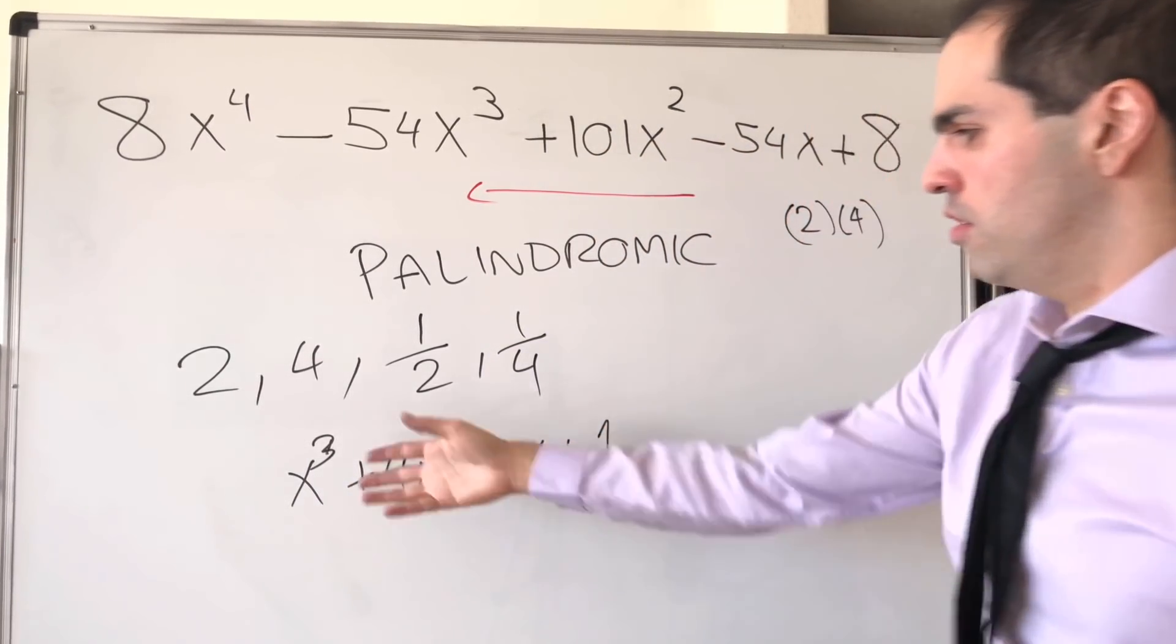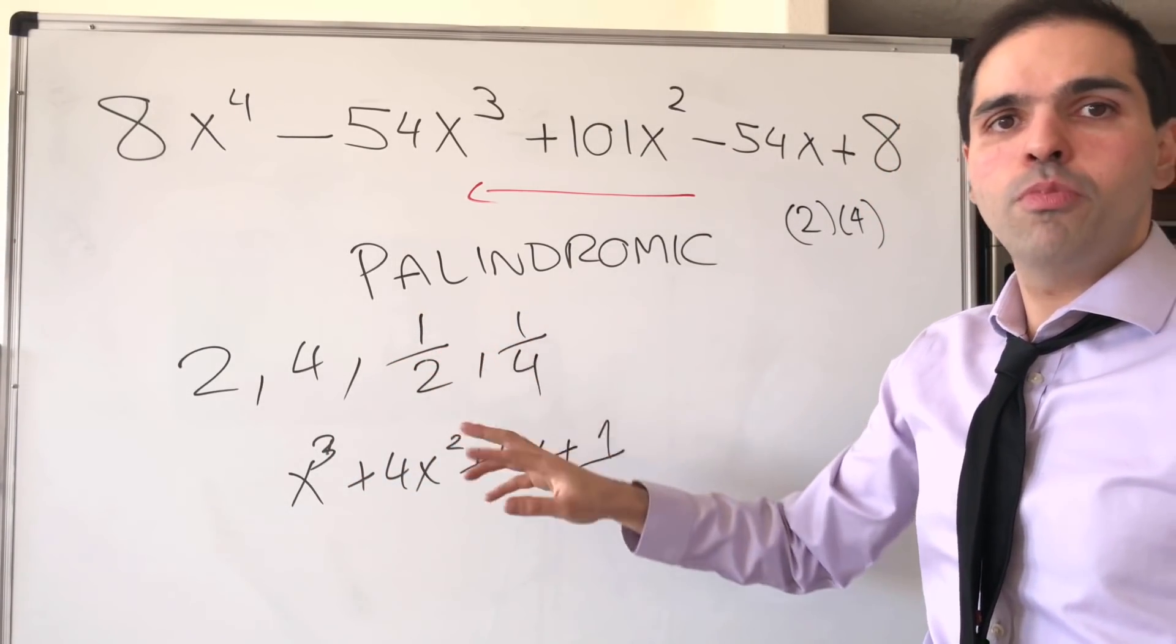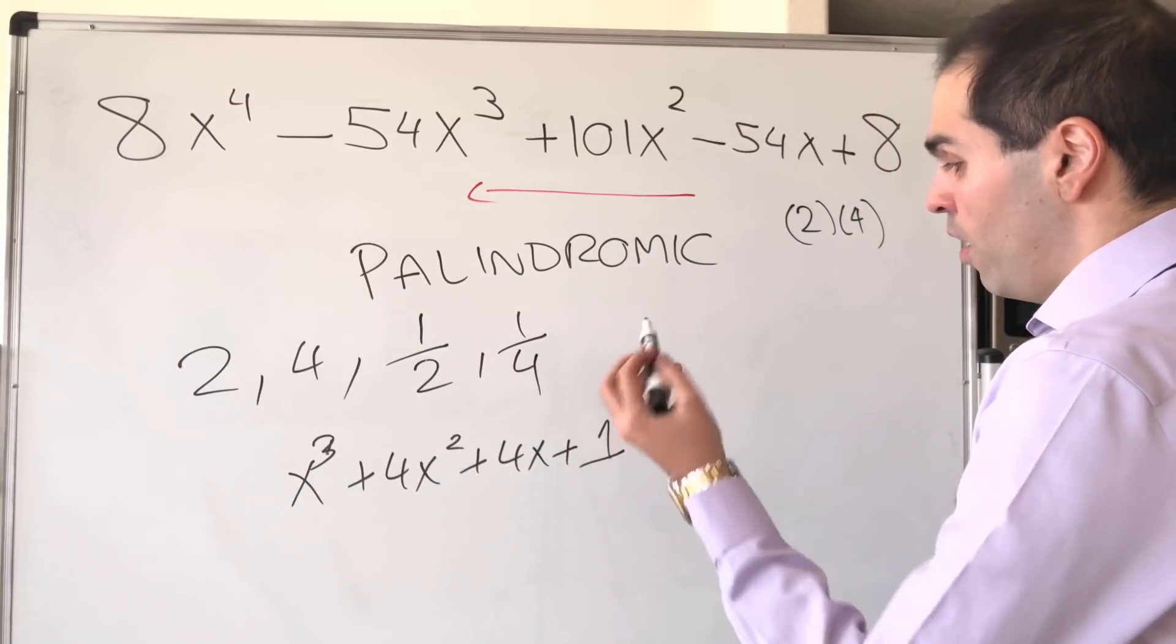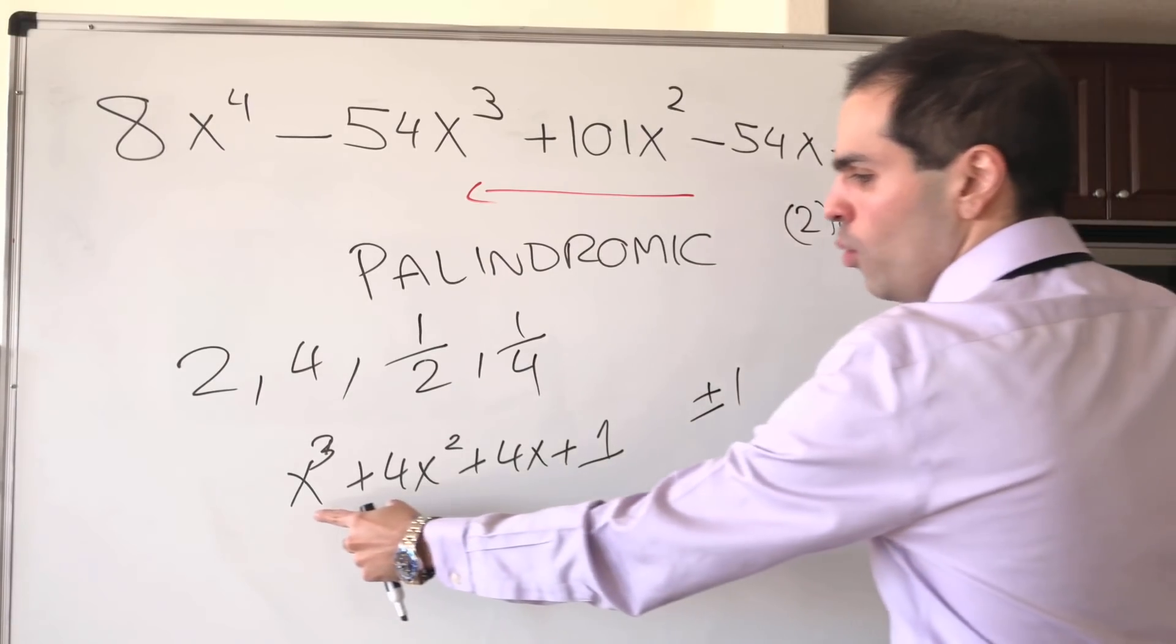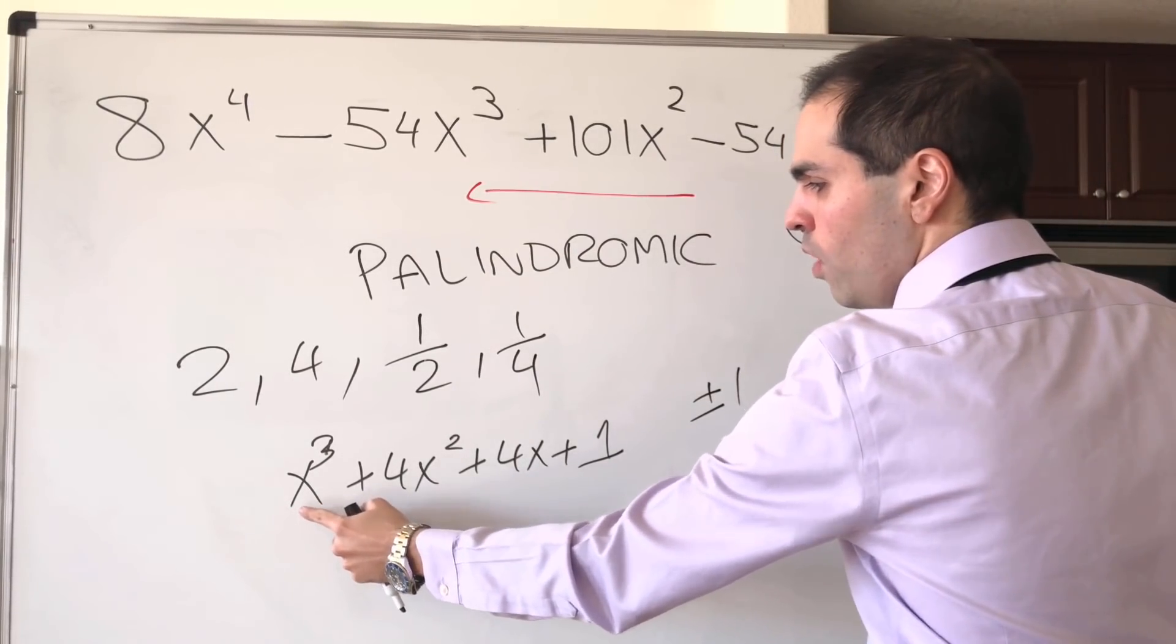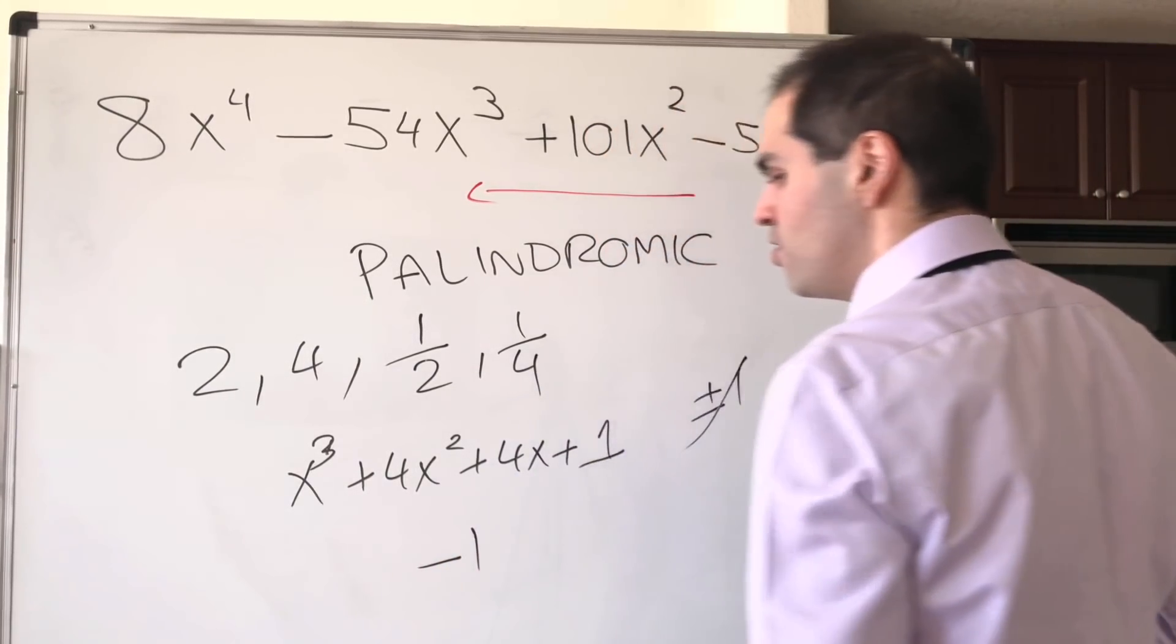it's palindromic and has odd degree. So because of this reciprocal business, one of the roots has to be either plus 1 or minus 1. But 1 wouldn't work, because you would do 1 plus 4 plus 4 plus 1. And therefore, one of the roots has to be minus 1.